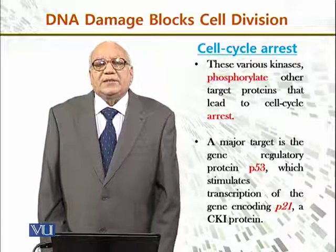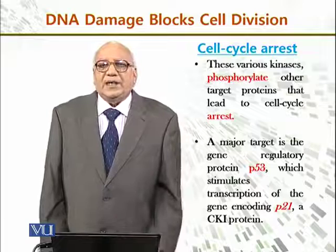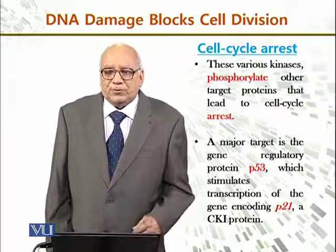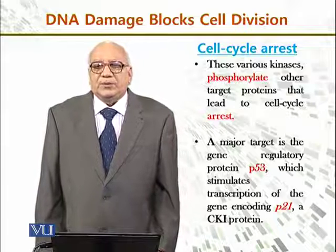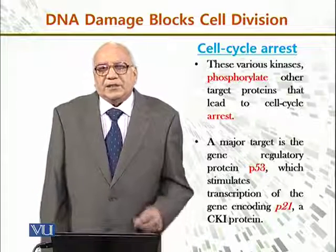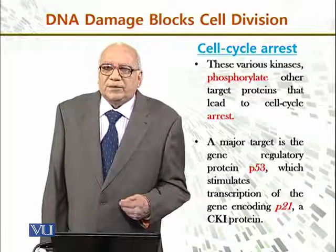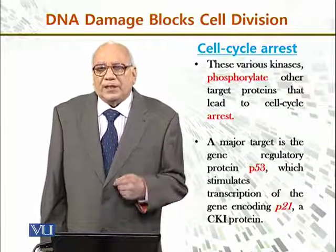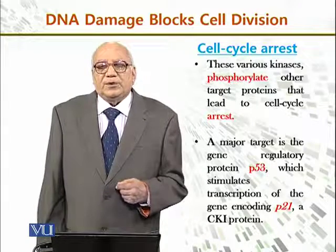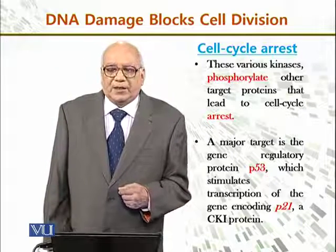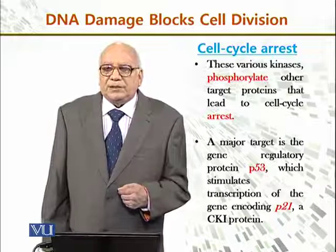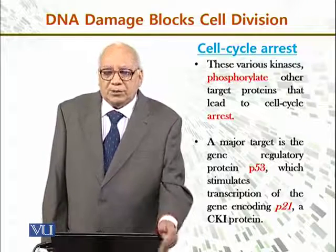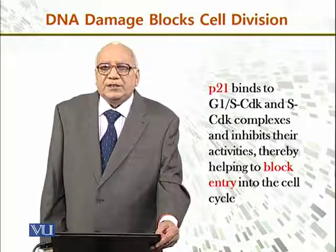During cell growth, the cell cycle is also arrested. Responsible for this arrest are various kinases which phosphorylate other target proteins and lead to cell cycle arrest. These target proteins are phosphorylated. A major target is the gene regulatory protein known as P53, which stimulates transcription of the gene encoding P21, a CKI protein. There is a whole cycle of proteins which are related together.